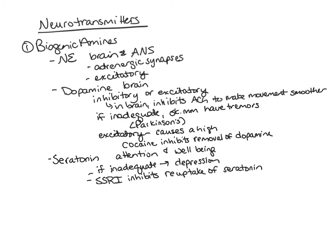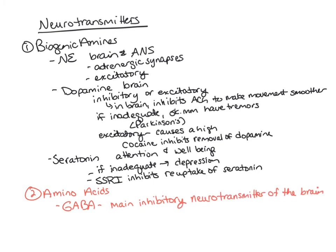Other than biogenic amines, there is a classification of neurotransmitters called amino acids. GABA, or gamma-aminobutyric acid, is the main inhibitory neurotransmitter of the brain. GABA reduces anxiety, and some anti-anxiety drugs like Valium enhance GABA. Twenty percent of all synapses in the brain release GABA. Glycine is another amino acid neurotransmitter and is the main inhibitory neurotransmitter of the spinal cord and brain stem.